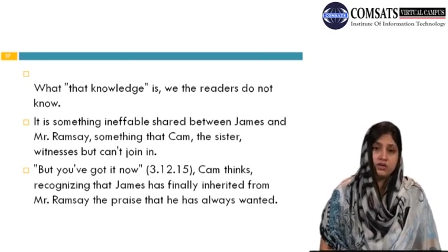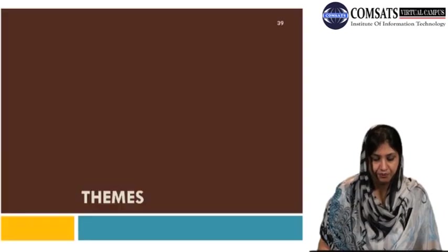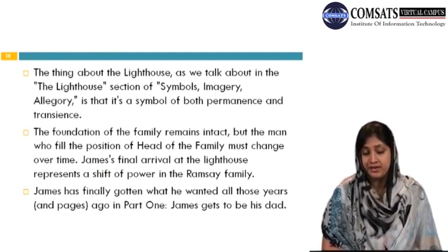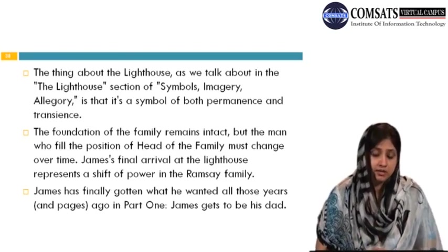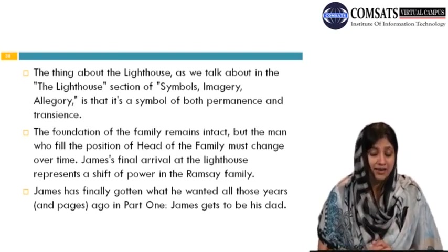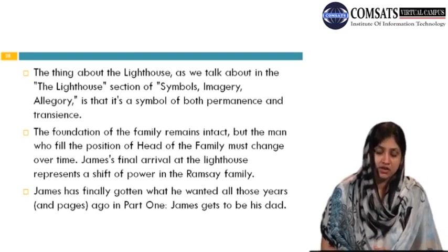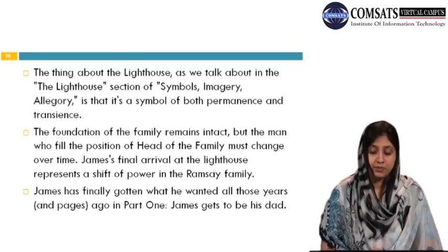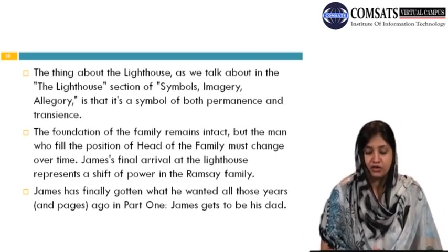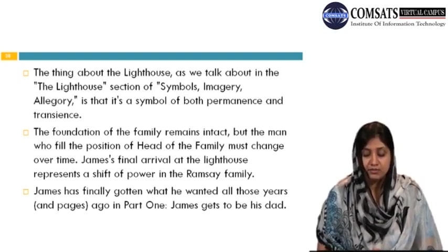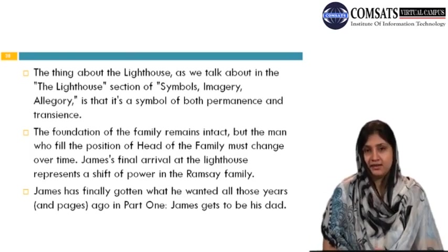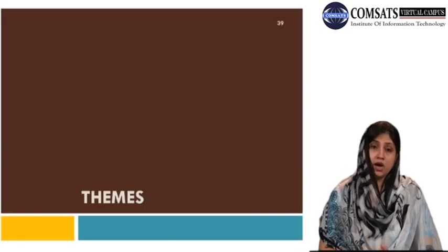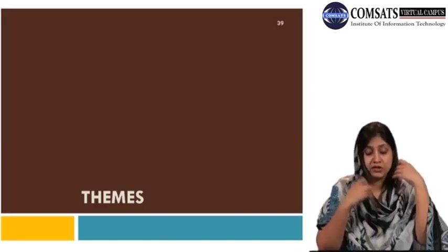The lighthouse is a symbol of both permanence and transcendence — the foundation of the family remains intact but the man who fills the position of head of the family must change over time. James' final arrival at the lighthouse represents a great shift of power in the Ramsey family. James has finally gotten what he wanted all those years — he finally gets to be his dad — and this makes James the most important male character in the novel. With this we are ready to start with the different themes in the plot.